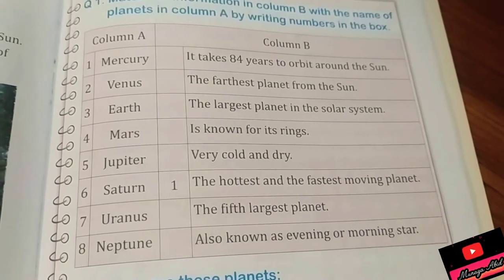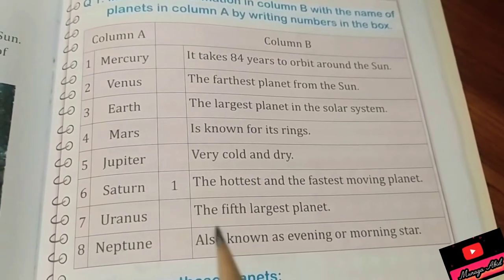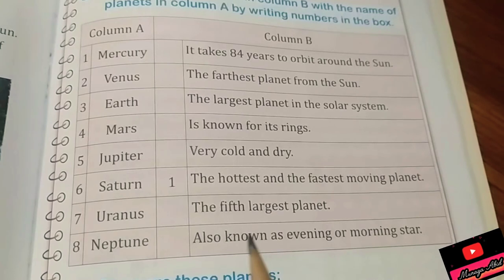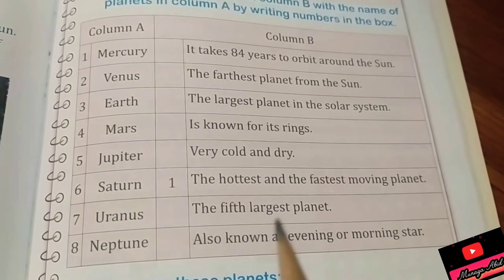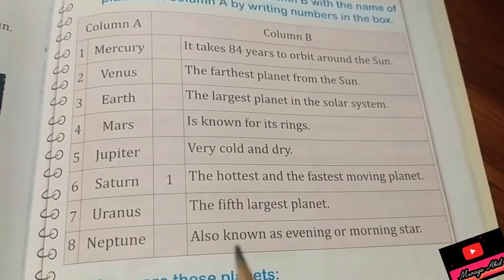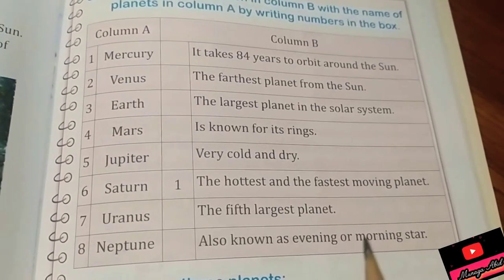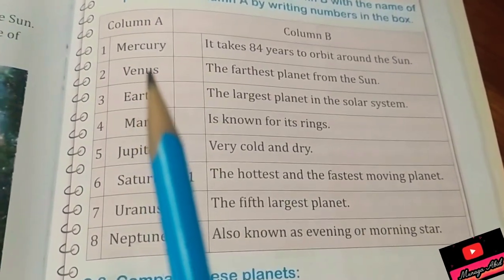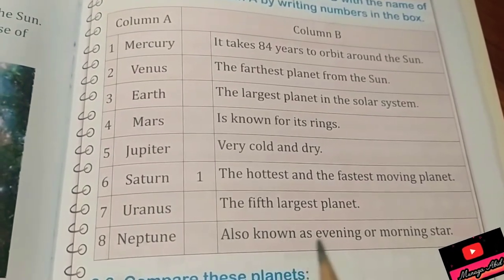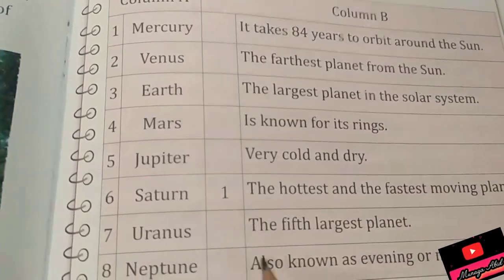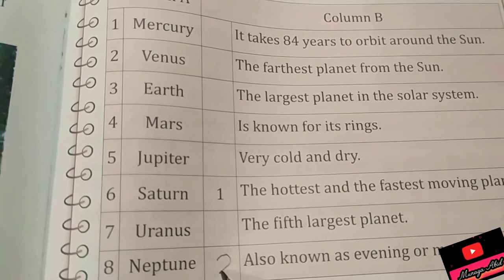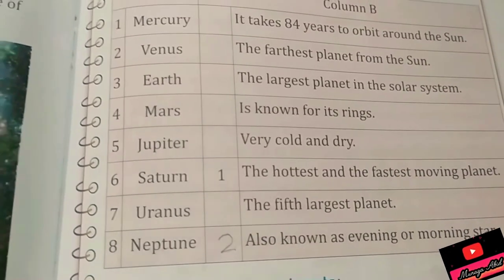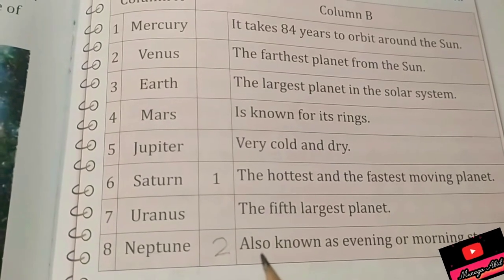Now second number is Venus, so think about it. Also known as evening or morning star. You remember Venus is also known as evening or morning star, so we will write two here. What is the number of Venus? Two, so we have written here two.